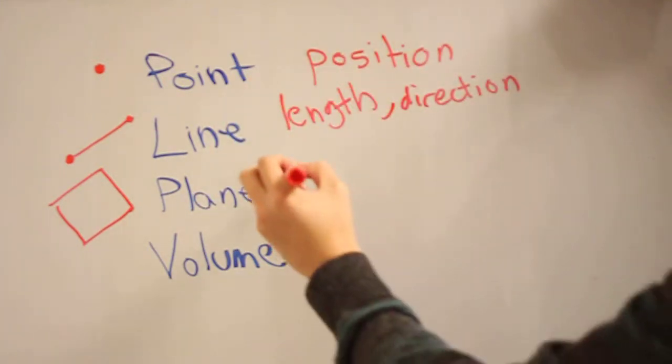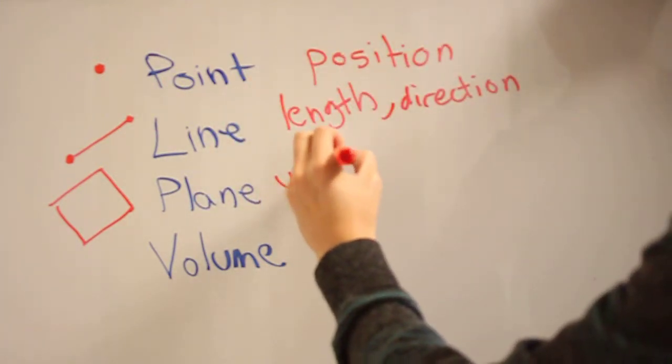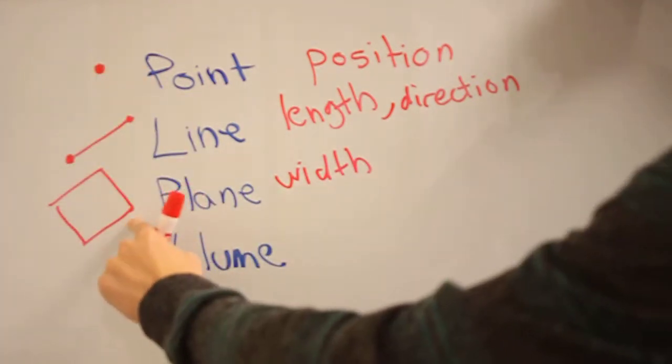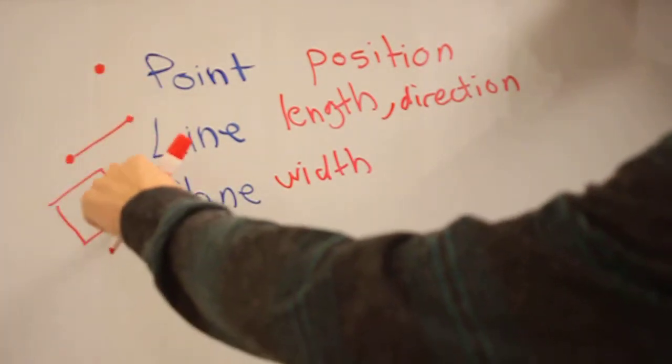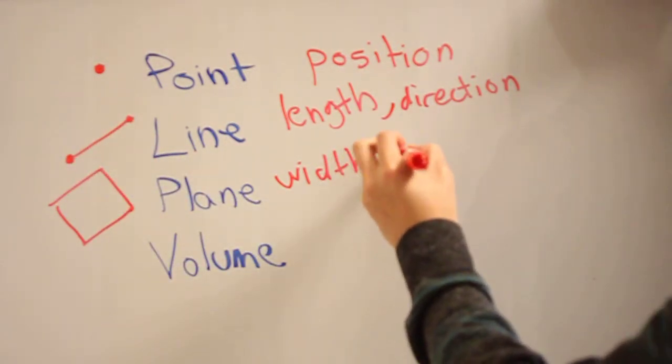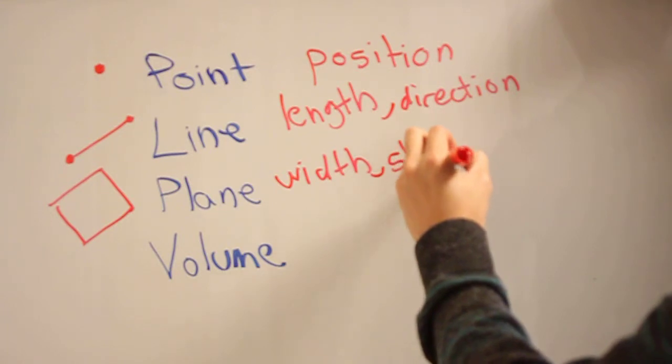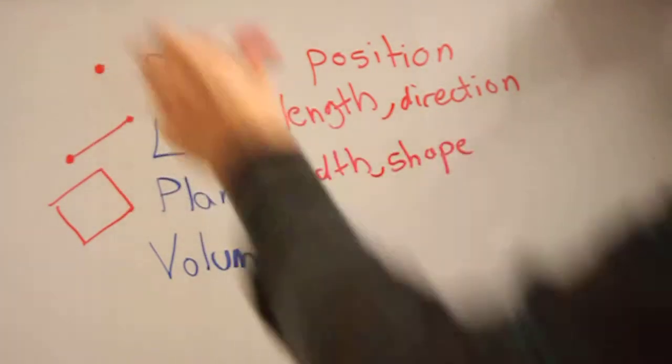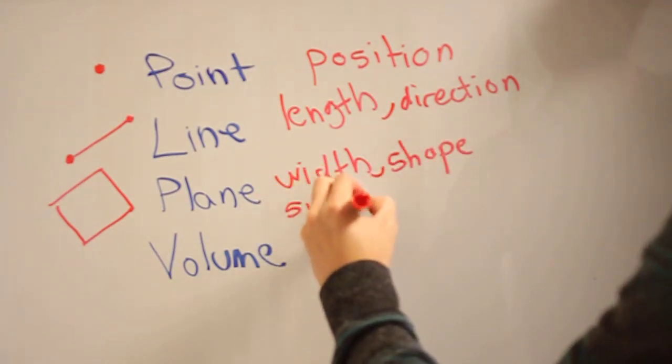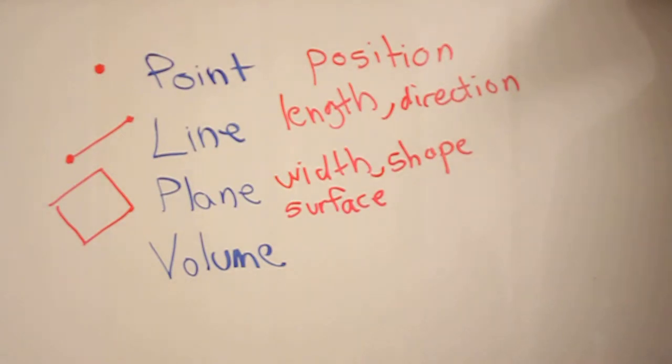Along with position, length, and direction, it has width. Because in addition to the length you had before, you also have the extended width. You also have shape, depending on how you extruded that line. You have surface, and you also have orientation.